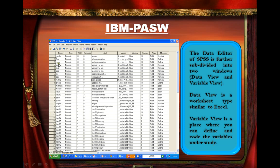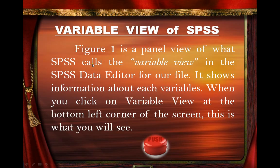For example, this is MAE — this is a code. However, this means it is mother's education. Figure 1 is a panel view of what SPSS calls the variable view. In the SPSS data editor, it shows information about each variable. When you click on variable view at the bottom left corner of the screen, this is what you will see.